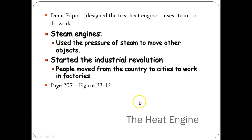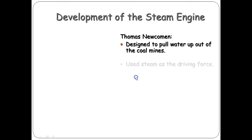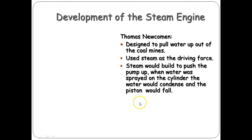Thomas Savery invented the first successful steam-powered pump. The bad news is the pump could only lift water about 6 meters, so it was not much better than animal power, and the boiler could not produce the pressure needed. Thomas Newcomen then designed an engine to pull water up out of coal mines, using steam as a driving force. Steam would build and push the pump up; when water was sprayed under the cylinder, it would condense and the piston would fall back down, repeating the process over and over.